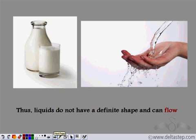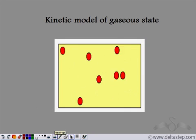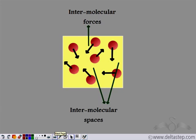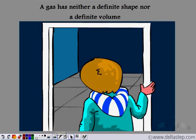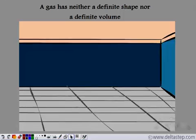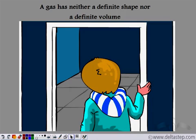Since the particles of a liquid are not as close to each other as in solids, liquids do not have a definite shape and they flow — that is why liquids are known as fluids. In the gaseous state, the particles are freely moving and the spaces between them are very large. The inter-molecular spaces between the particles of the gaseous state are very large, which is why the inter-molecular forces are very weak. This is the reason why gases occupy the entire space available to them — because the particles are very far apart from each other.